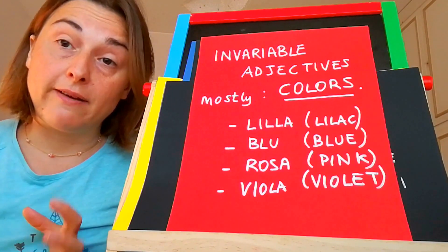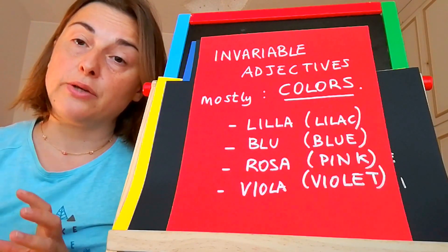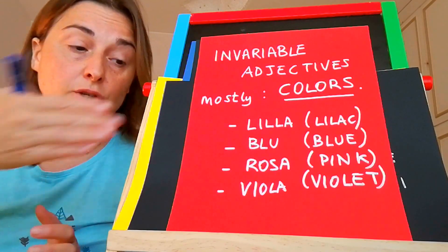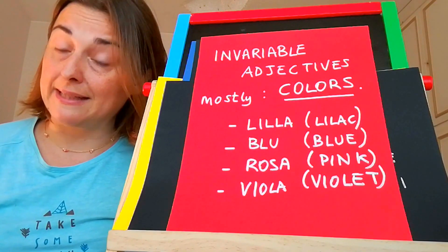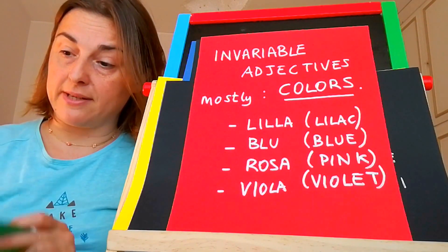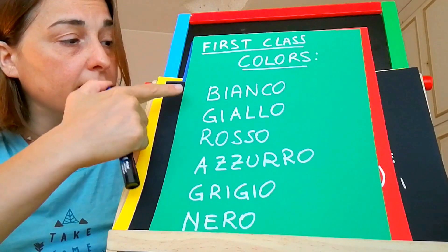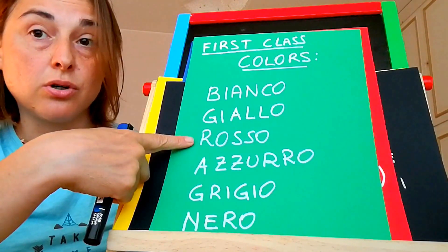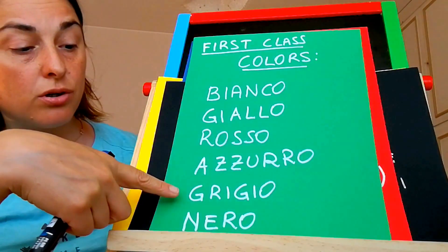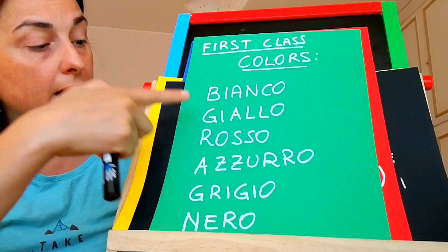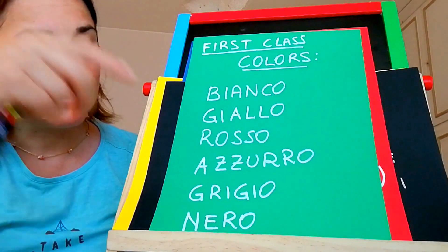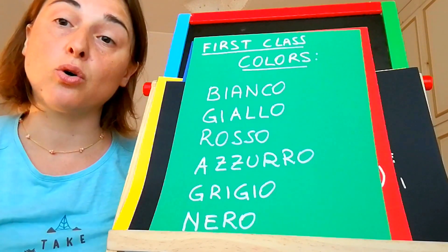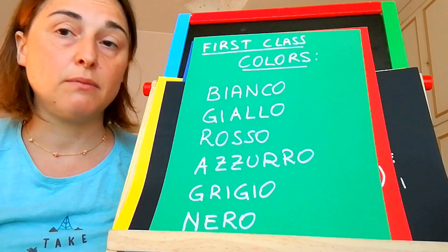Given that we have spoken about colors, you must know that colors are adjectives. In addition to those unchangeable colors, you have color adjectives under the first class, like bianco, giallo, rosso, azzurro, grigio, and nero — white, yellow, red, light blue, gray, and black. These change their terminations. So you have bianco, bianca, bianchi, bianche.